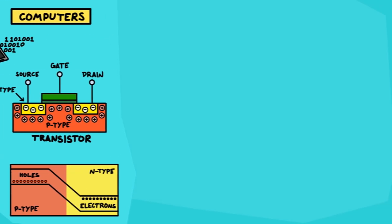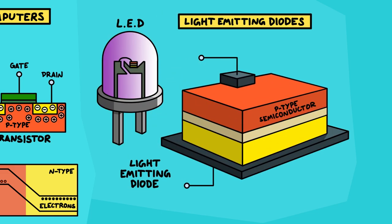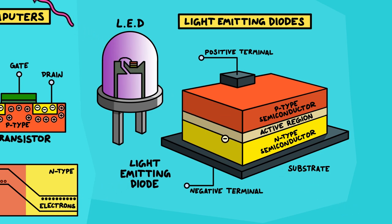Technologies two and three are the screen you're watching this on and the camera that I recorded this on — both also rely on the quantum physics of semiconductors. Most screens today are backlit by LEDs, light emitting diodes. These are semiconductor devices where, when you apply a voltage, an electron goes from one semiconductor to another, loses energy, and emits light. A lot of engineering effort has gone into making LEDs that are very bright and also white in color.